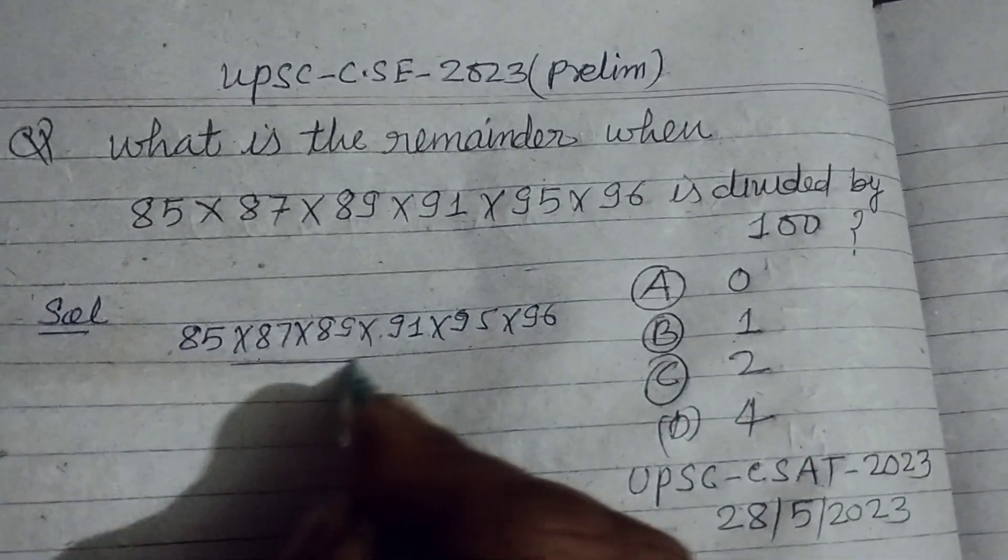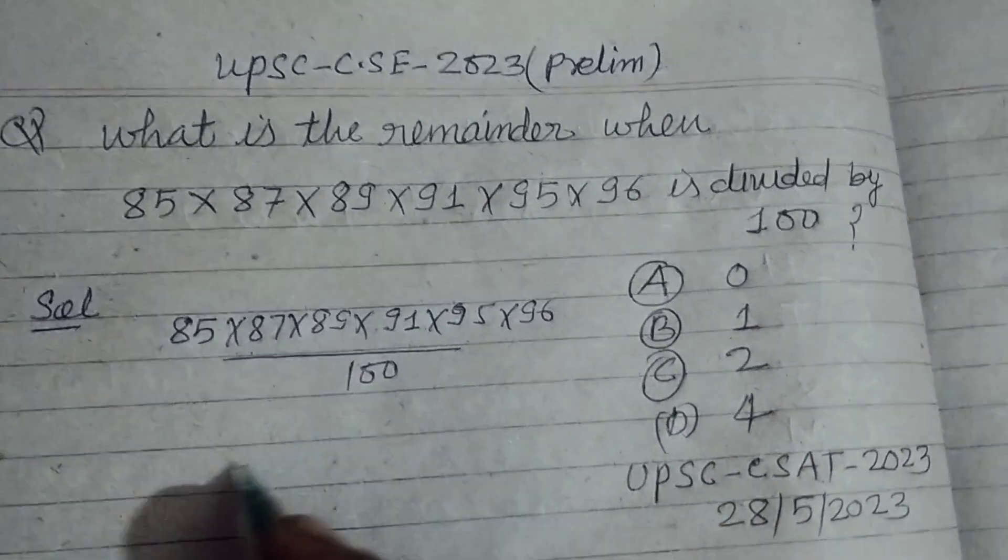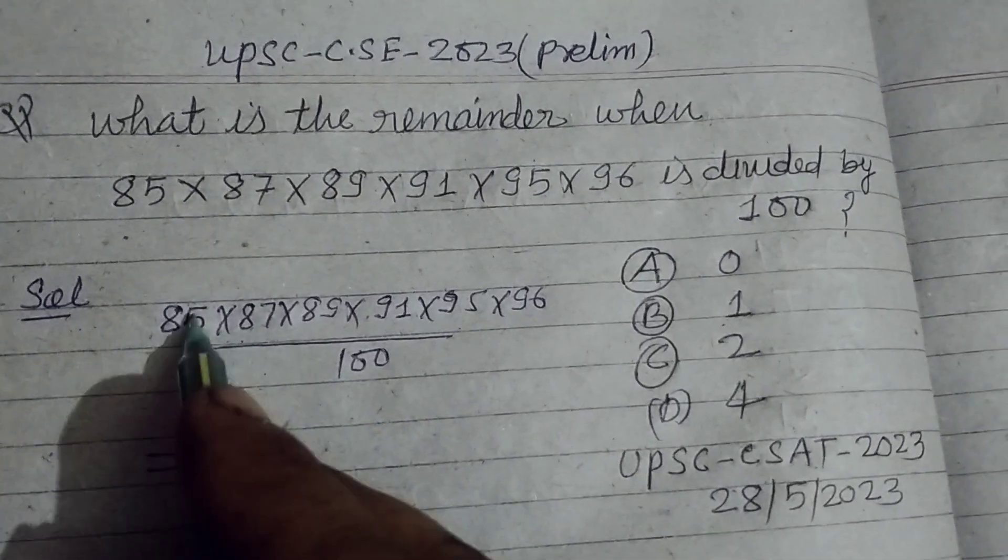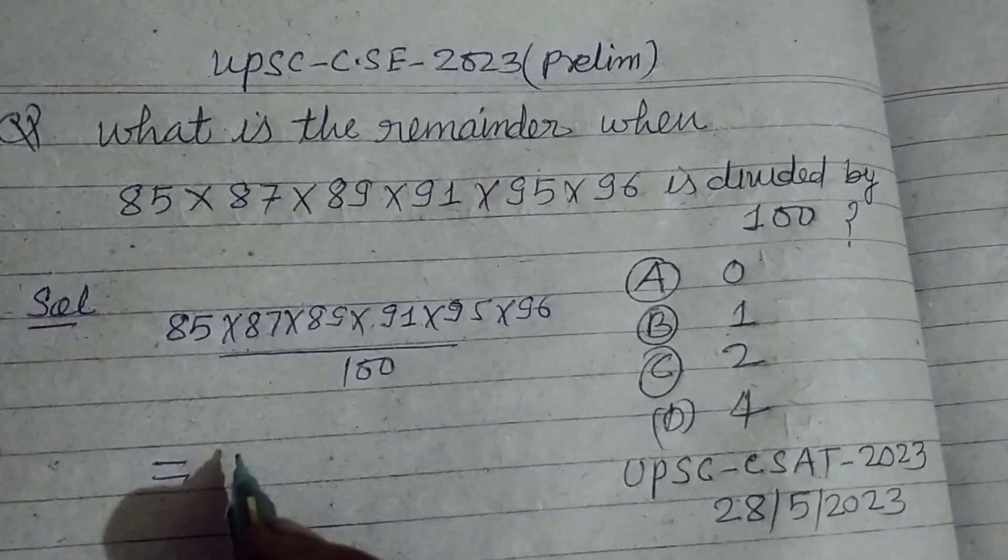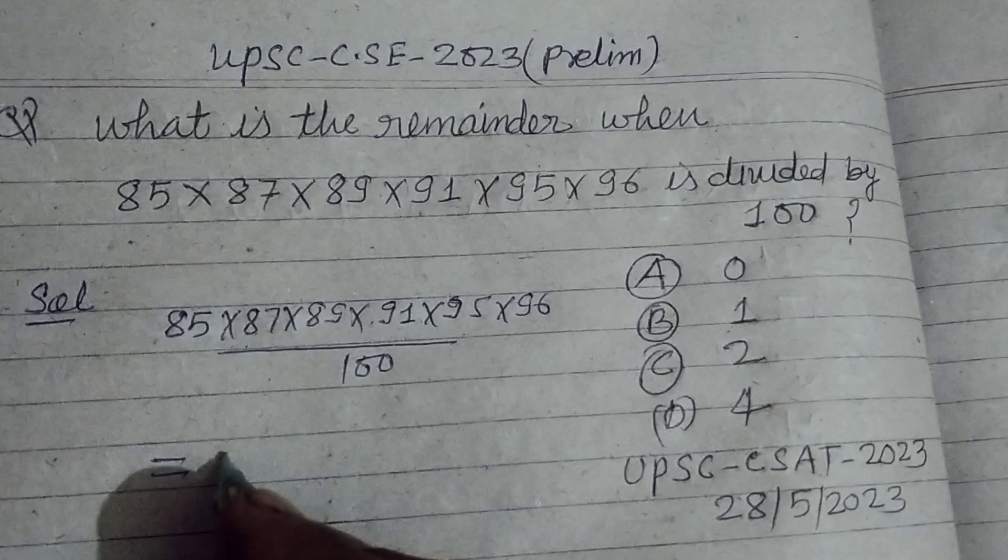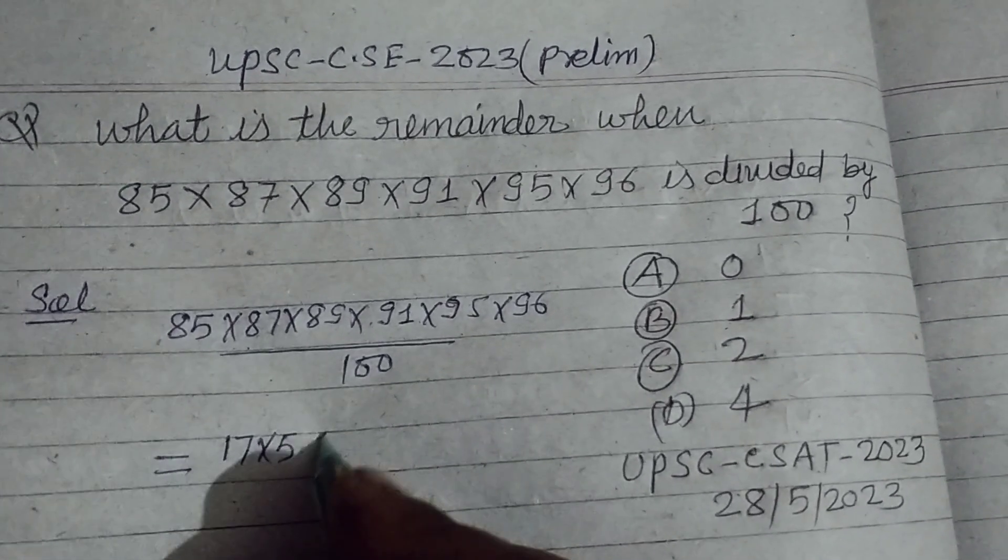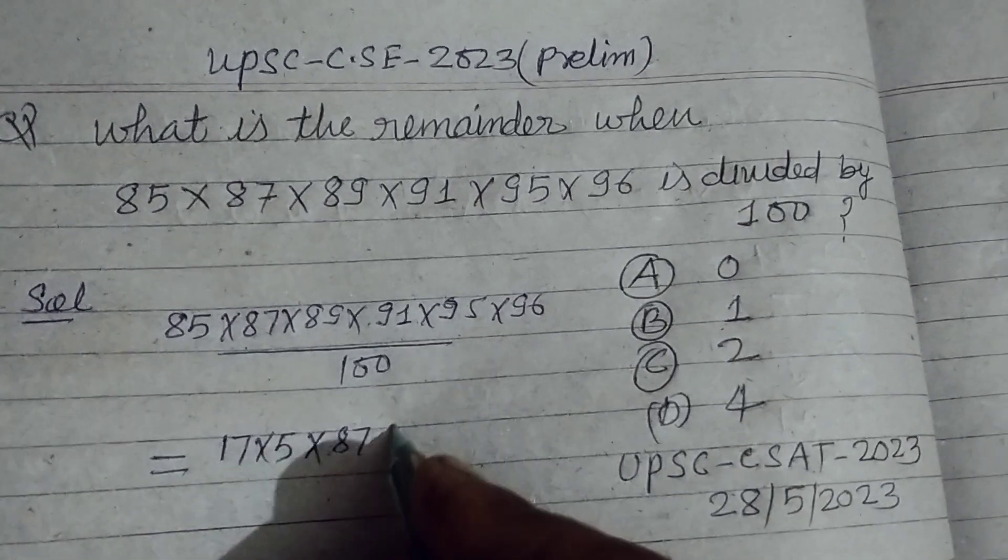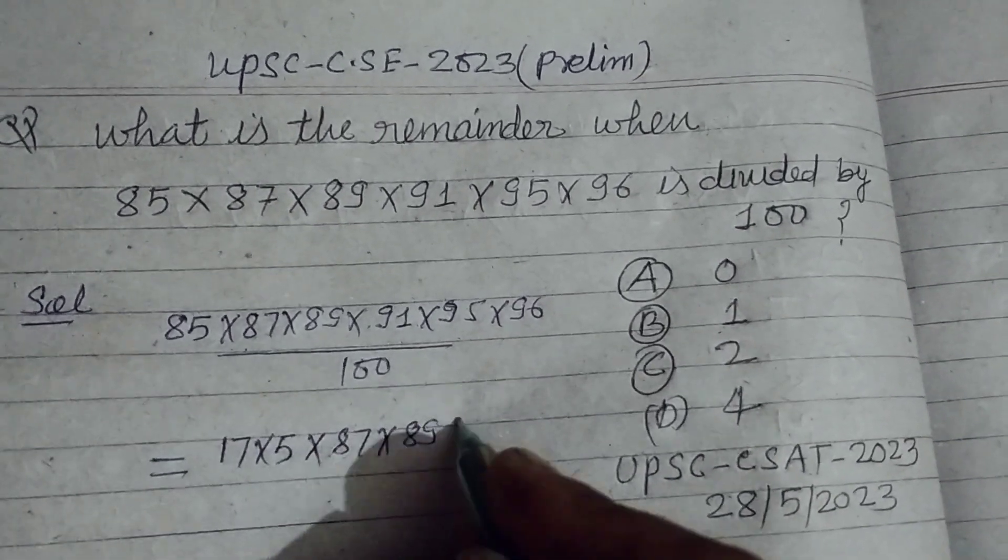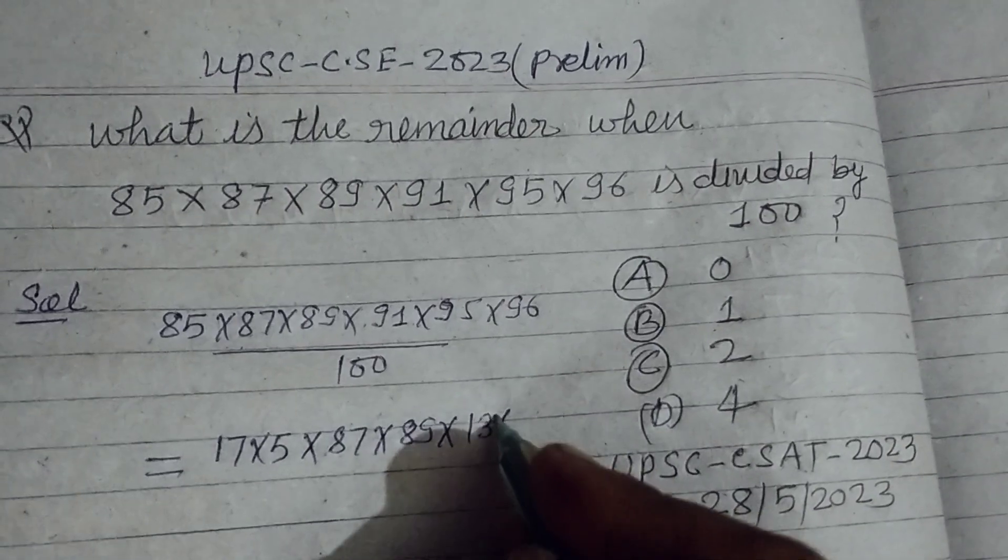First we make the factors of the numbers which are in the numerator. So 17×5 is 85, 87 is prime, 89 is prime, 91 is 13×7.